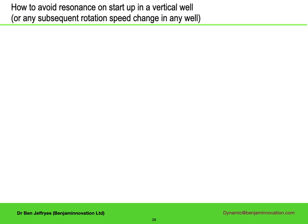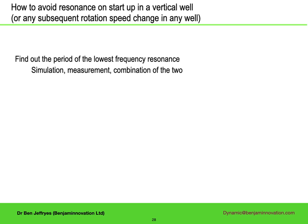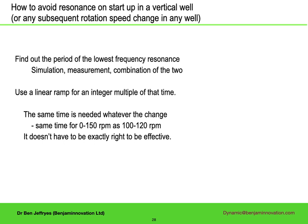So what's the rule for this? Firstly, you have to know what the period of the lowest frequency resonance is — which you can do by simulation, or just by looking at the spectrum of your surface torque data. Then you change rotation speed over that period, or an integer multiple of that period. Whatever the rotation speed change, you do it over an integer multiple of the period of the resonance. It doesn't matter if you don't get it exactly right — it just means there will be a bit of vibration.